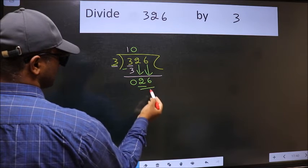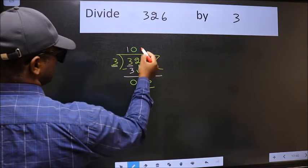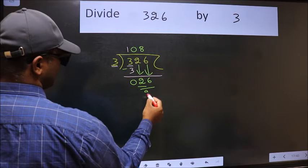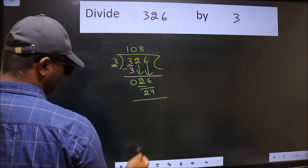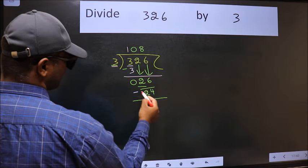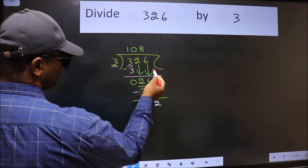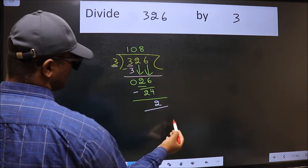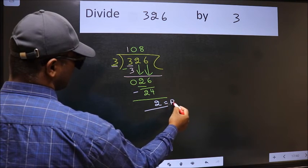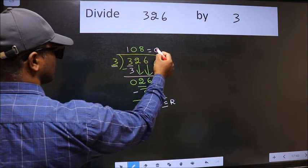Now 26. A number close to 26 in 3 table is 3 eights 24. Now we should subtract. We get 2. No more numbers to bring it down, so we stop here. This is our remainder and this is our quotient.